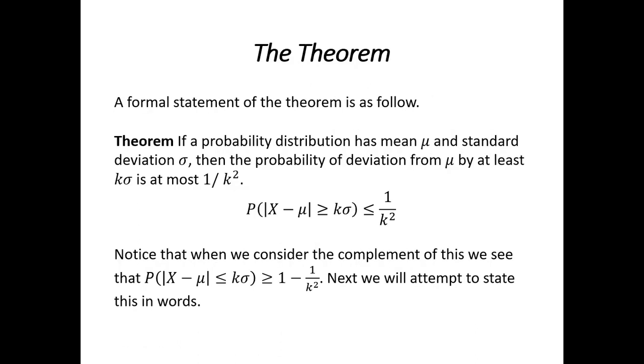The formal statement of the theorem goes as follows. If a probability distribution has mean μ and standard deviation σ, then the probability of deviation from μ by at least kσ is at most 1/k². In mathematical terms, we get an inequality that tells us the probability that a deviation is greater than or equal to kσ is less than or equal to 1/k².